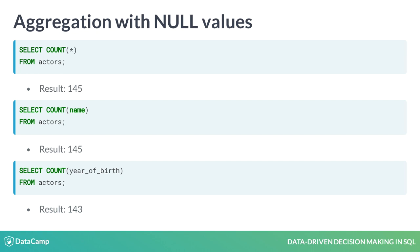The column year of birth has two null values. That's why the third query returns 143 instead of 145.